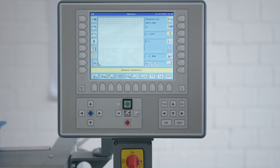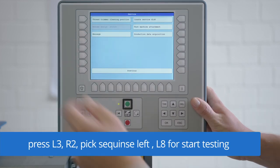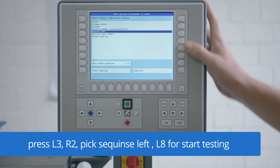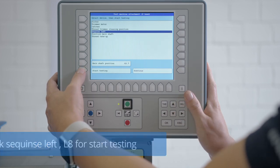After the loading process, we go over to the T8 to enter the testing menu. Therefore, we press the button service L3, then R2 test machine attachment. We pick sequence left and push L8 for start testing.